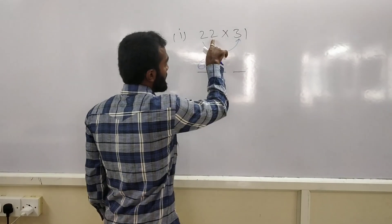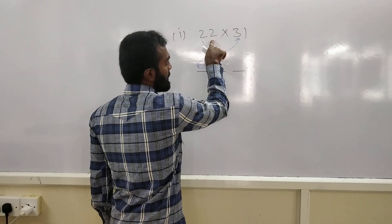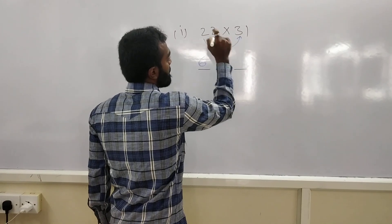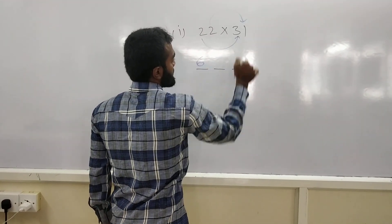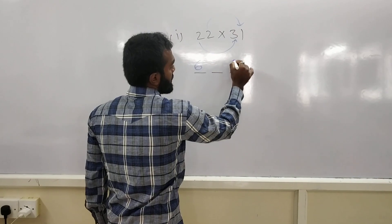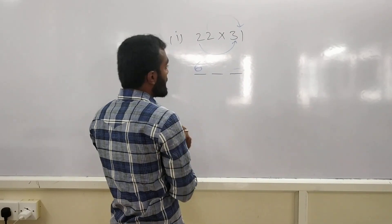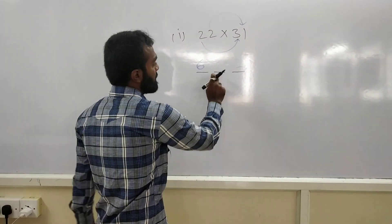And, multiply the last digit of 1st number with last digit of 2nd number. And, put the result in the last place. 2 into 1 is nothing but 2. And, to get in between number. To get in between number.